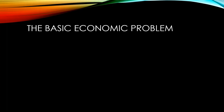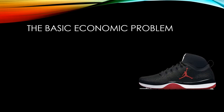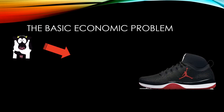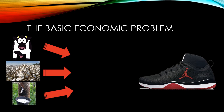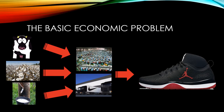In order to consider the basic economic problem on a wider scale, let's start by looking at the resources that go into the production of just one type of good — trainers. Leather, cotton and rubber will all be needed in the production of trainers. Each of these requires the use of scarce resources like land, labour and capital. Further labour and capital will then be used to make, market and distribute the trainers.